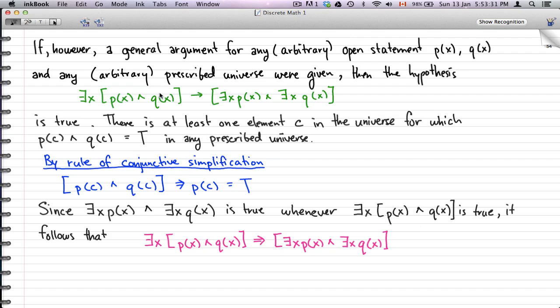It might be possible for this Ex to distribute into the P(x) and Q(x), but that really just depends on the universe. In this case, there is at least one element C in the universe for which P(c) and Q(c) is true in any prescribed universe. So by the rule of conjunctive simplification, P(c) and Q(c) implies P(c), and that is true. It follows that Ex [P(x) and Q(x)] logically implies [Ex P(x) and Ex Q(x)].